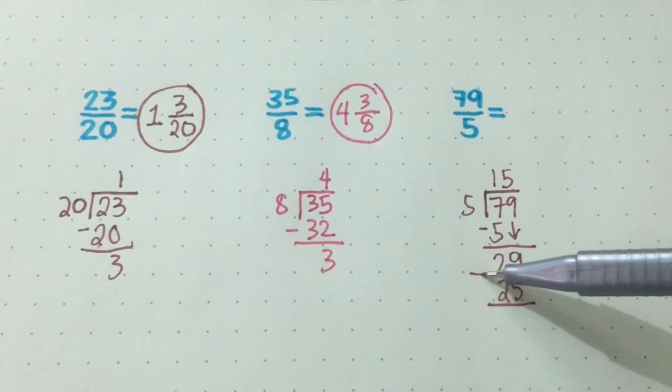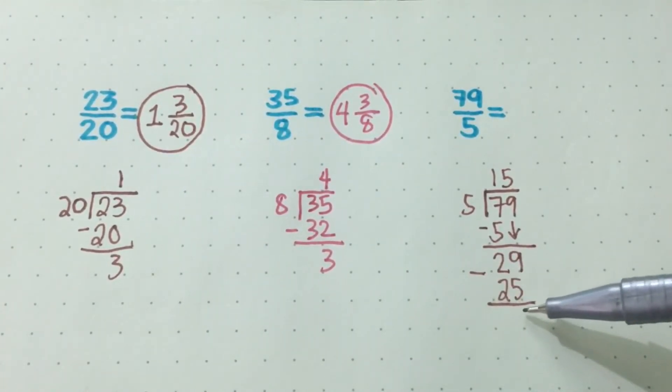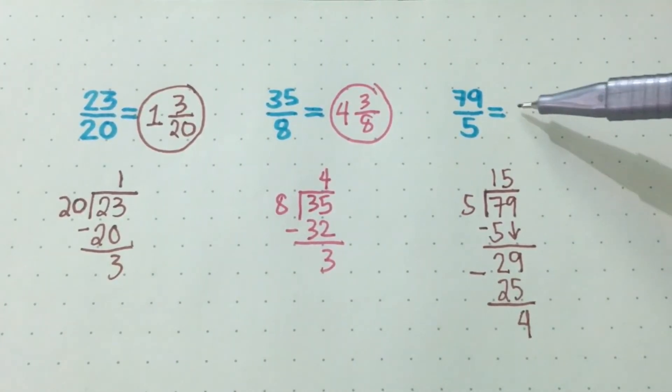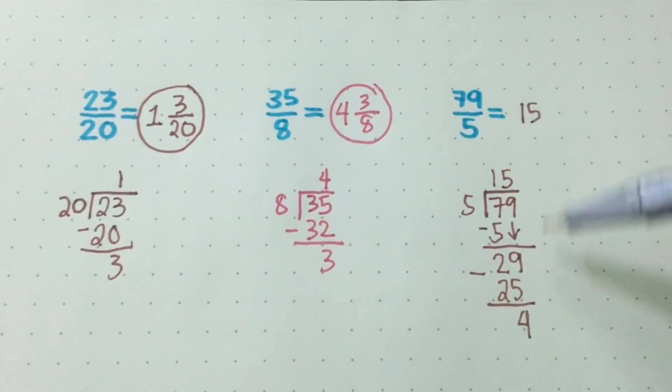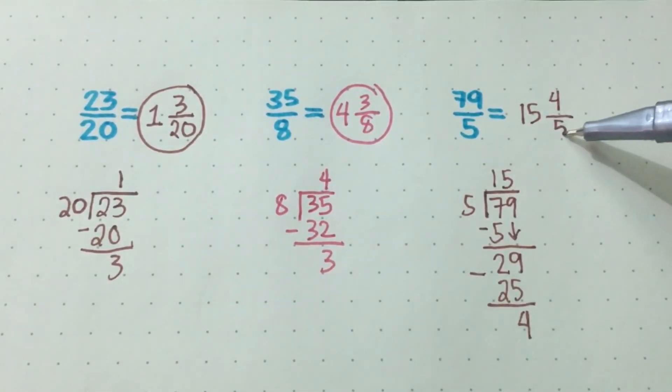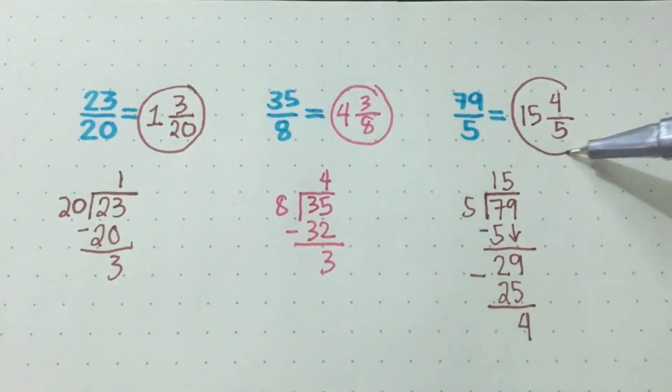Subtract. 29 minus 25, you'll get 4. So no digit to bring down anymore, so that's it. Your answer, which is 15, will be your whole number. Remainder is your numerator, and the divisor is your denominator. So we got 15 and 4 over 5.